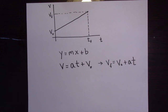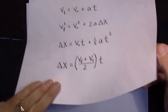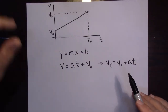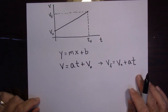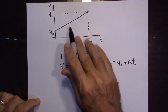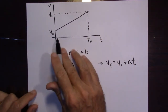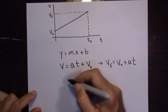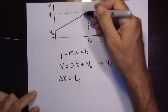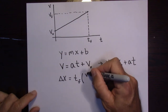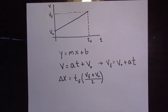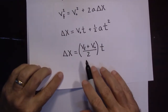Now to get the next equation, delta X is the area underneath the graph. There are two ways to find that area. One is to recognize that this shape is a trapezoid. The area of a trapezoid is the base times the average height. So delta X equals T_F (the base) times (V_final + V_initial) divided by 2 (the average height). That gives us that equation.